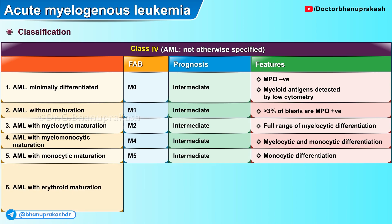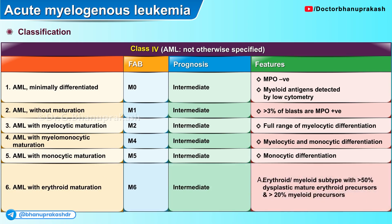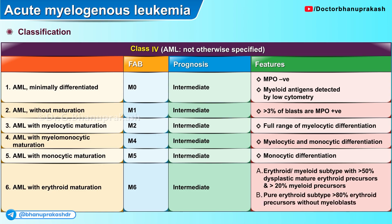The sixth variant is AML with erythroid maturation, classified under M6 of the FAB system. The erythroid/myeloid subtype shows more than 50% dysplastic mature erythrocyte precursors and more than 20% myeloid precursors. Another variety with pure erythroid subtype has more than 80% erythroid precursors without any myeloblasts.